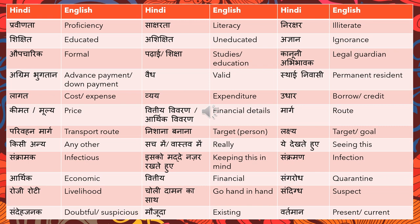'Yeh dekhte huye' means seeing this, or in this scenario. 'Sankramak' means infectious. 'Isko madde nazar rakhte huye' means keeping this in mind. 'Sankraman' means infection. 'Aarthik' means economic; 'Vittiya' means financial. 'Sangrod' means quarantine. 'Roji roti' means livelihood. 'Choli daman ka saath' means go hand in hand — for example, 'In dono ka choli daman ka saath hai.' 'Sandigdh' means suspect. 'Sandehjanak' means doubtful or suspicious. 'Maujuda' means existing. 'Vartaman' means present or current.